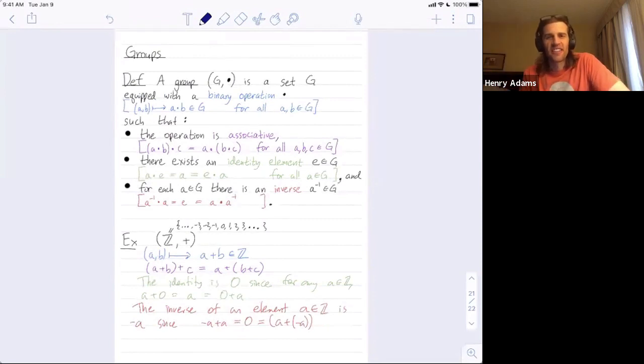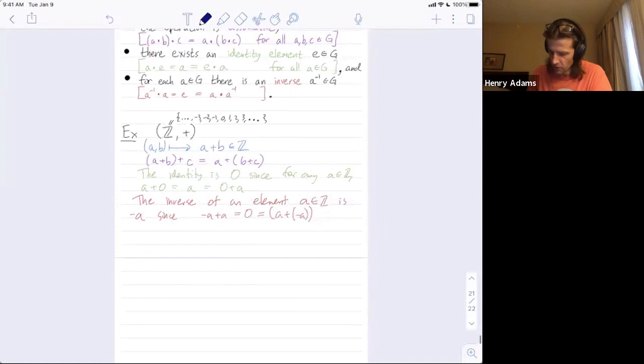Welcome folks! I wanted to give another example of a group. So we defined groups together in the last video and then we talked through this example of the integers equipped with addition where the identity was zero because adding zero to any integer doesn't change it and the inverse of an element was just its negative because an element added to its negative always gives us zero. Let me give you another example of a group.